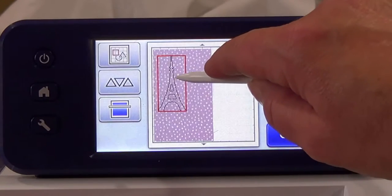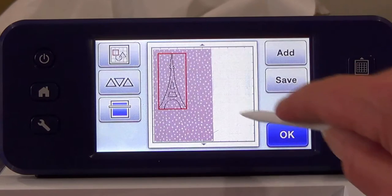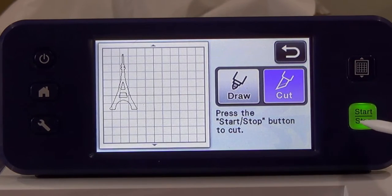Move your pattern onto your fabric where you would like it to be cut. Press OK. Press Cut and press Start.